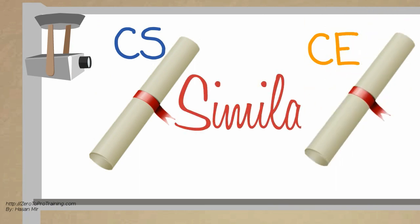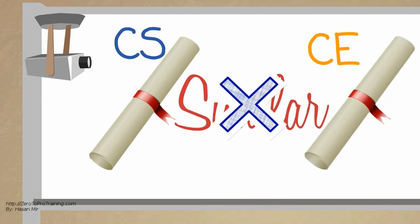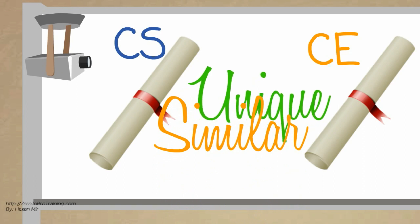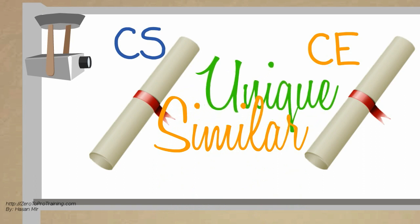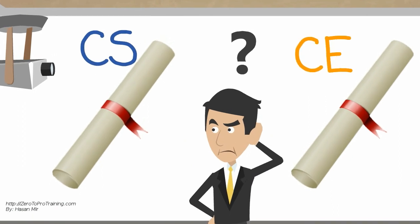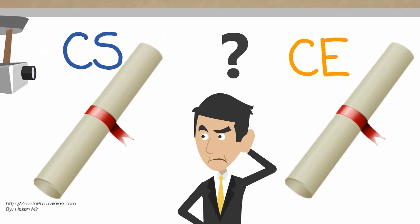Computer science and computer engineering are often mistaken as similar disciplines. They are very unique from each other. Both do have some similarities as well. It is important to understand how the two compare in order to better understand the rapidly changing technology world.